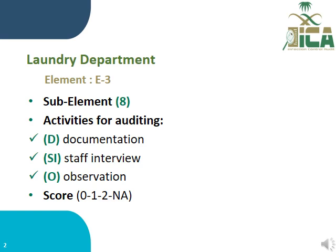The total number of elements is 8, and the activities for auditing are documents, staff review, and observation. The score will be 0, 1, 2, or not applicable.